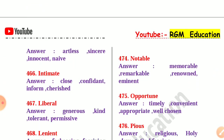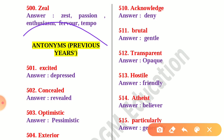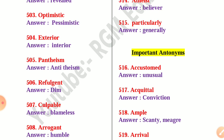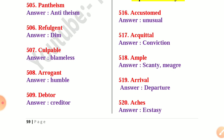Now we move to the antonym part. If I discuss every single question it will take three to four hours to complete this video. You can get the PDF of the entire video containing 800 plus questions and answers — the link is in the description below. Antonyms from previous years: excited — depressed; concealed — revealed; optimistic — pessimistic; exterior — interior; pathism — anti-pathism; refulgent — dim; culpable — blameless; arrogant — humble; debtor — creditor, and so on.